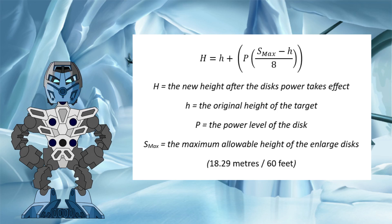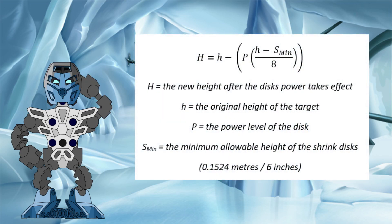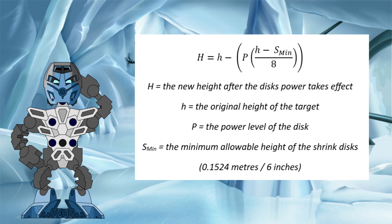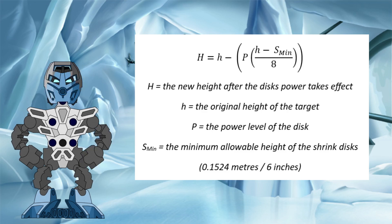If we also assume that it would still increase by the same linear progression of the previous eight levels of disc, this means that the height maximum the great disc could enlarge a Toa to increases up to a massive 20.3 meters. However, if we apply the same logic to the theoretical shrink great disc, the equation gives us a new height that is below zero — negative 0.1 meters. Given that a negative height doesn't really make much sense, this gives a possible reason as to why there is no great disc of shrinking: it is not possible for a shrink disc of this level to exist.